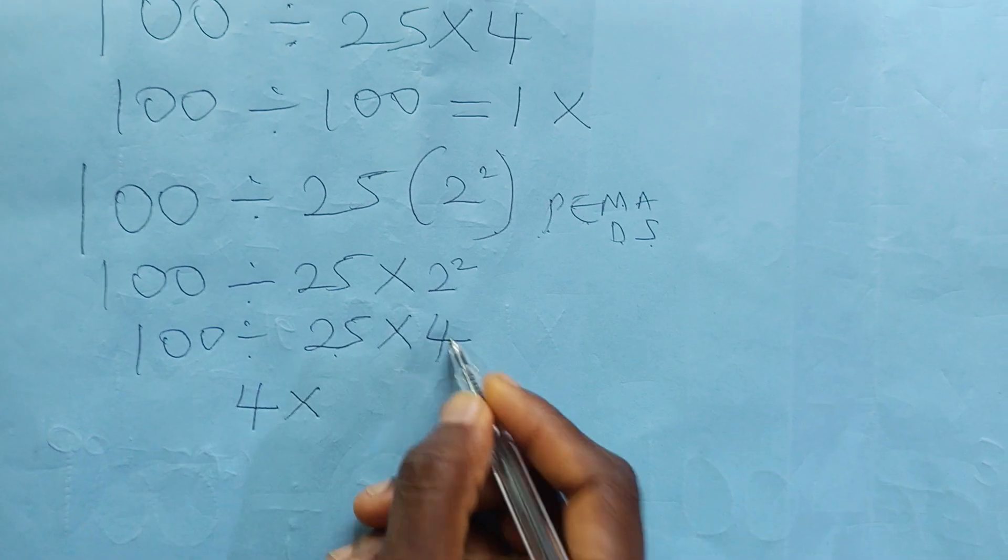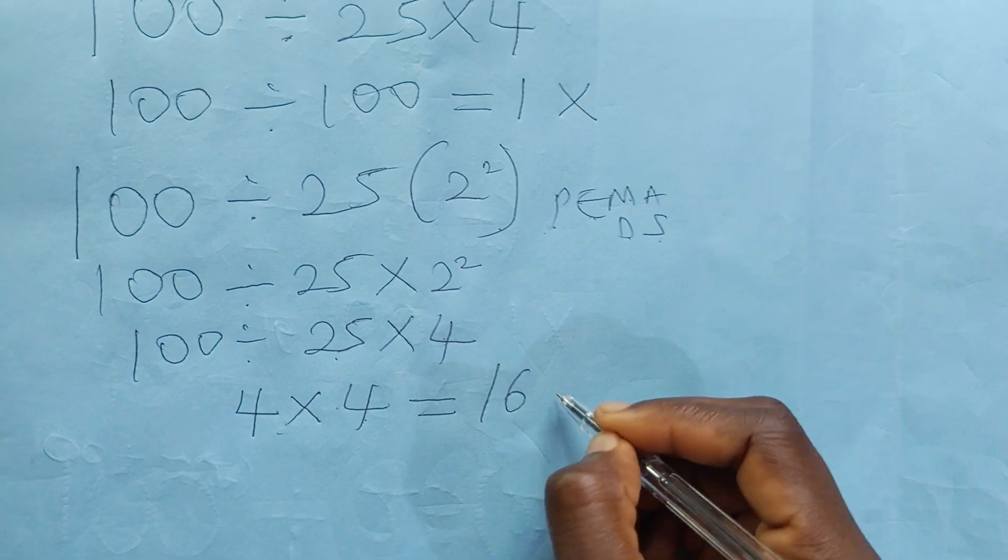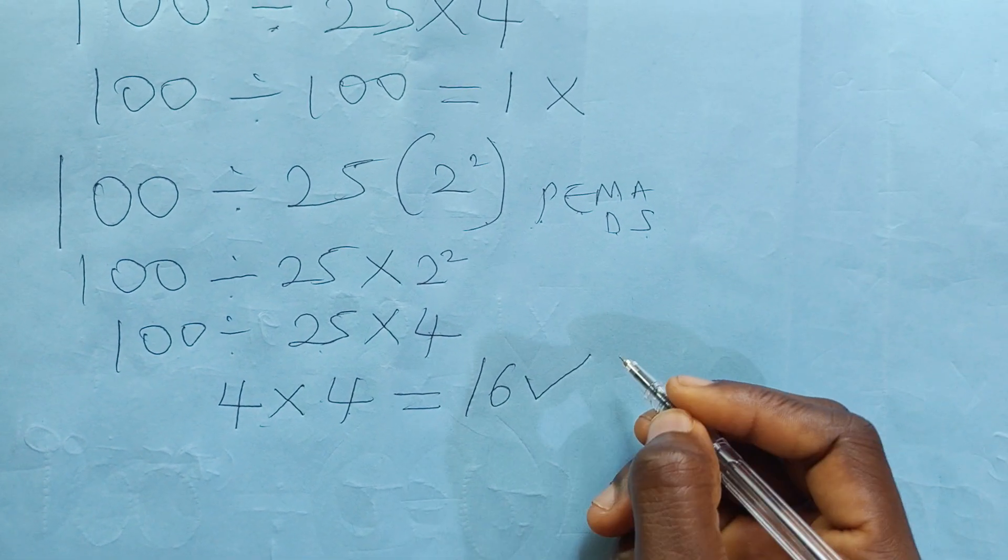Then times—if you bring this 4 down—4 times 4 will give you 16. This is the correct answer.